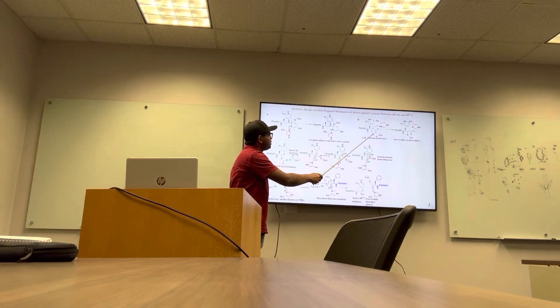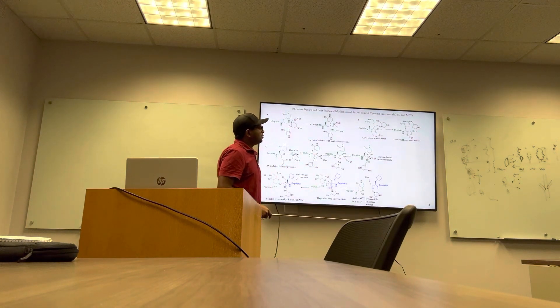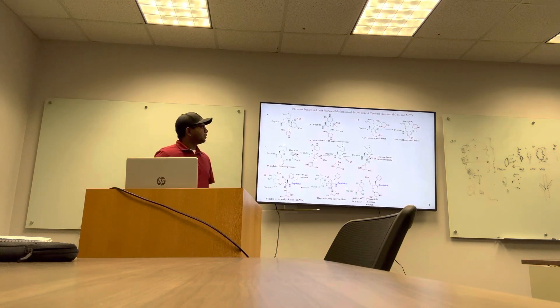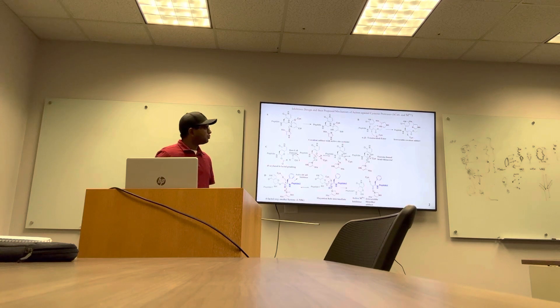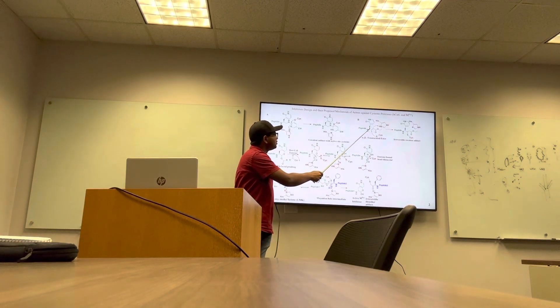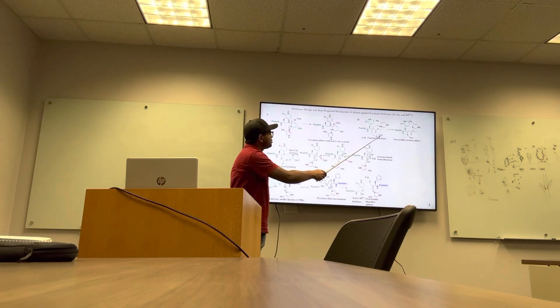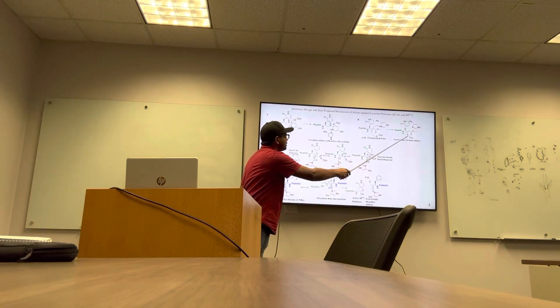Second is alpha-beta unsaturated ester. Alpha-beta unsaturated carbonyls are present in large number of FDA-approved drugs that target cysteine proteases and are proven to be well-known Michael acceptors for cysteine proteases, where cysteine-thiolate attacks the beta-carbon and forms irreversible thioether adduct.